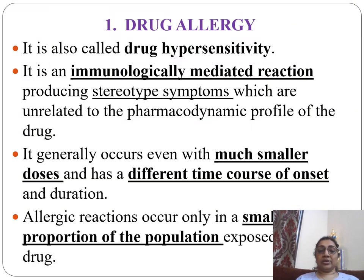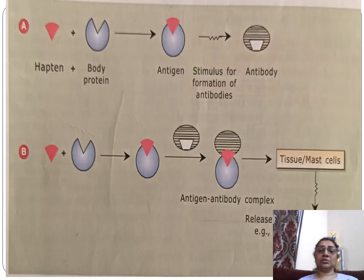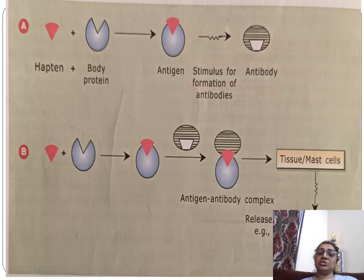Drug allergy, also called drug hypersensitivity, is an immunologically mediated reaction producing stereotyped symptoms unrelated to the pharmacodynamic profile of the drug. It generally occurs even at much smaller doses and has a different type, course of onset, and duration. It occurs only in a small proportion of the population exposed to the drug. The mechanism involves a hapten binding with body protein to form an antigen, stimulating antibody formation; on next exposure, antigen-antibody complex formation causes mast cells to release histamine and leukotrienes, producing the hypersensitivity reaction.